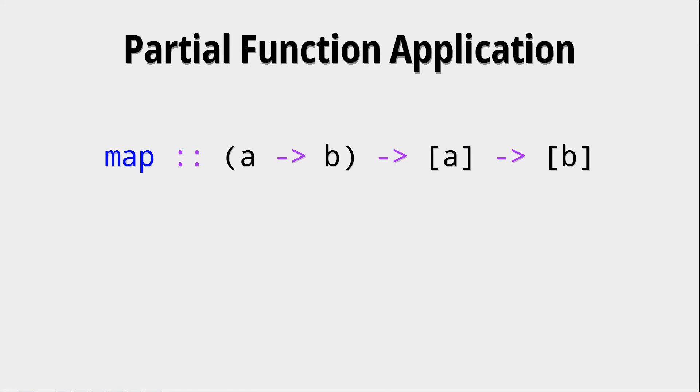Let's look at map because map is a prime candidate for such a thing. For example if you want to have a new function which we call doubleList which takes a list and multiplies every single element by two, we can do it like this where we use the map function and do partial function application on this.